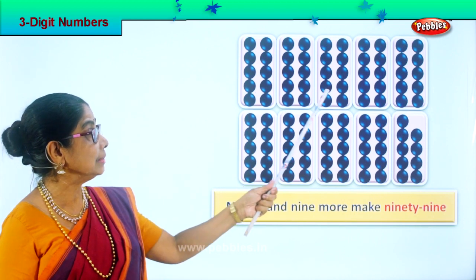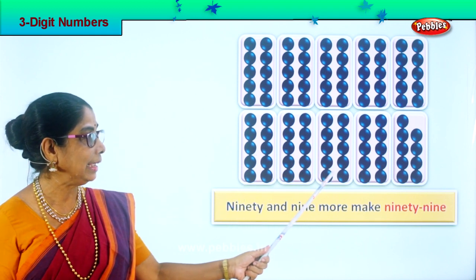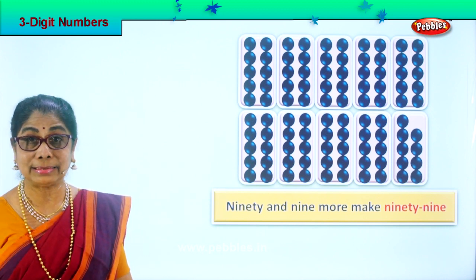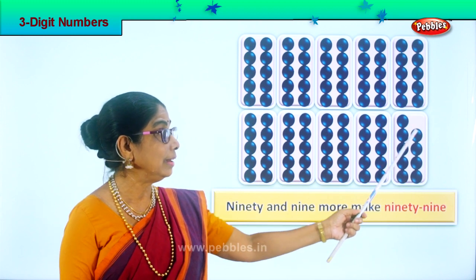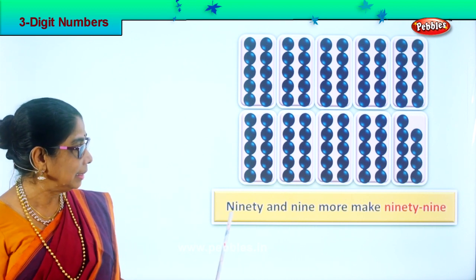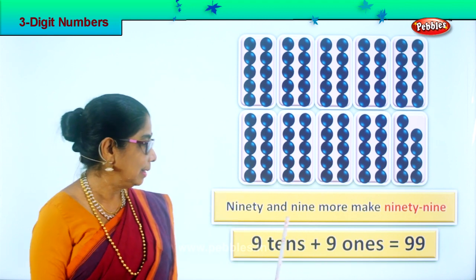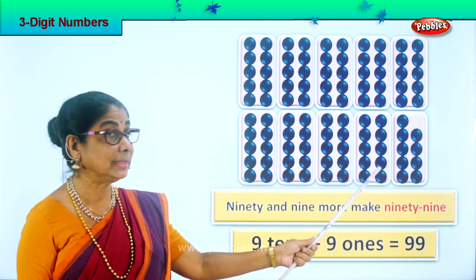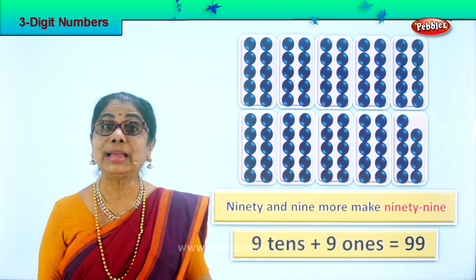One ten, two tens, three tens, four tens, five tens, six tens, seven tens, eight tens, nine tens. There are nine boxes of ten each. But this last box has one less — one, two, three, four, five, six, seven, eight, nine. So nine tens plus nine ones equals ninety-nine. Ninety and nine more make ninety-nine.